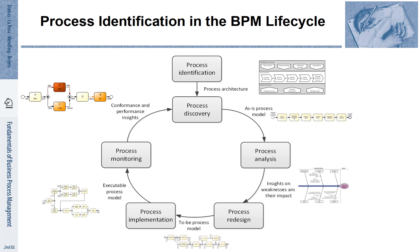Here you see where process identification is located in the BPM lifecycle. It is concerned with strategic aspects and infrastructure aspects of the overall process organization of the company. One of the major outcomes of process identification is the definition of a process architecture, which then helps to select suitable processes for improvement initiatives.